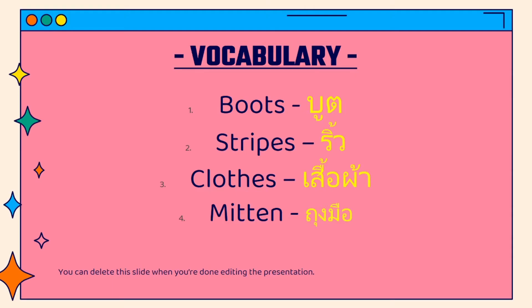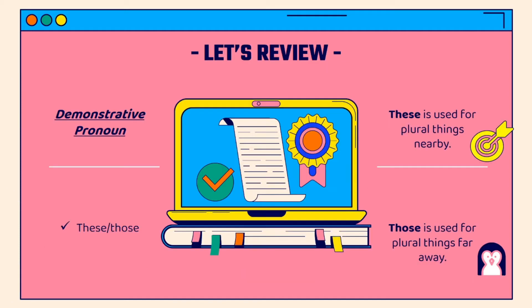Here are the vocabularies for today: number one — boots, number two — stripes, number three — clothes, number four — mitten. Now let's review the previous lesson: demonstrative pronouns using 'these' and 'those.'